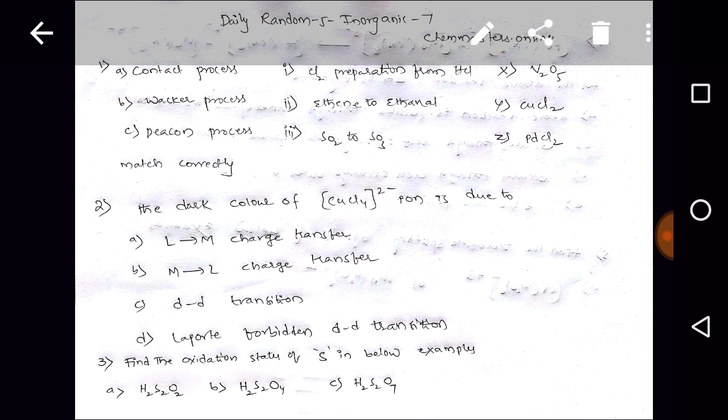Third question: find the oxidation states of sulfur in below given examples. So A H2S2O2, B H2S2O4, C H2S2O7.